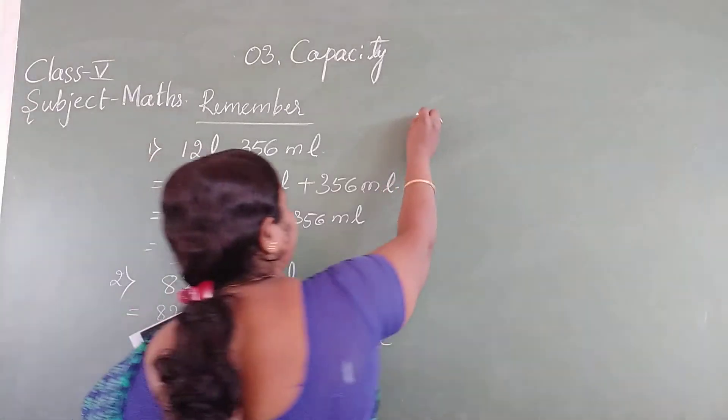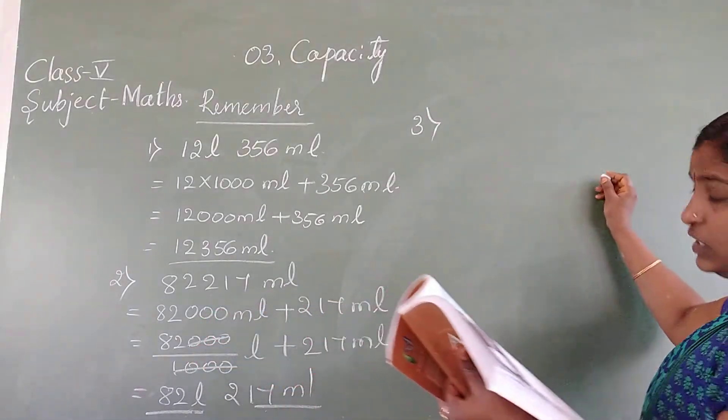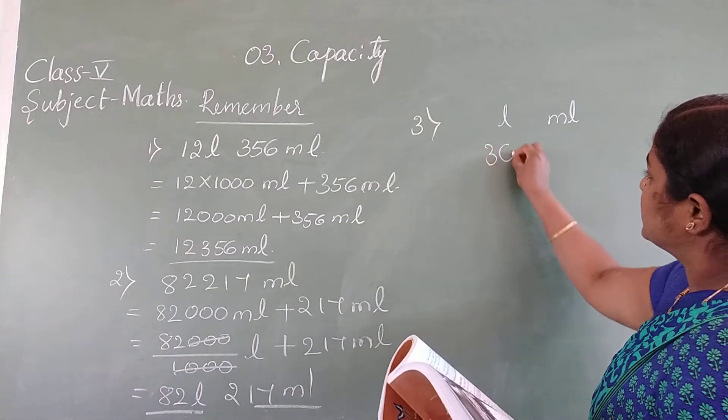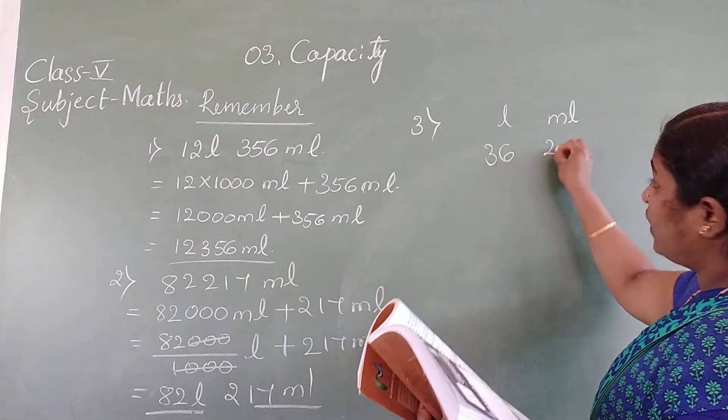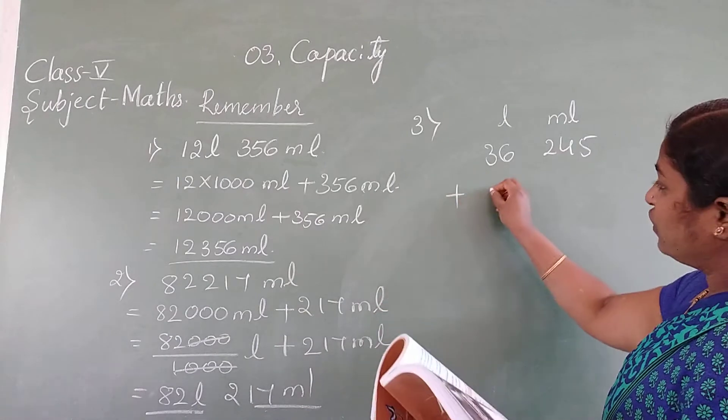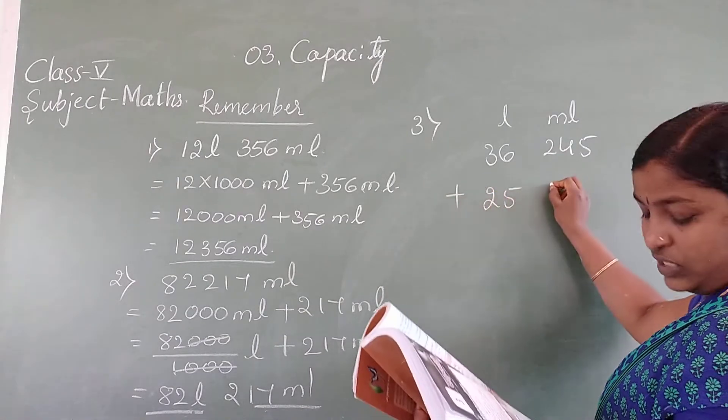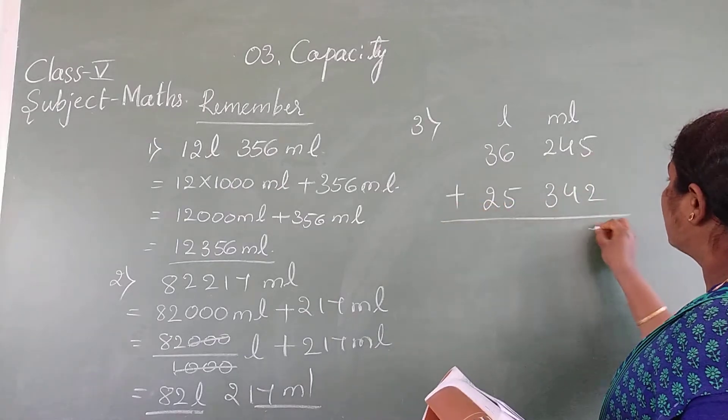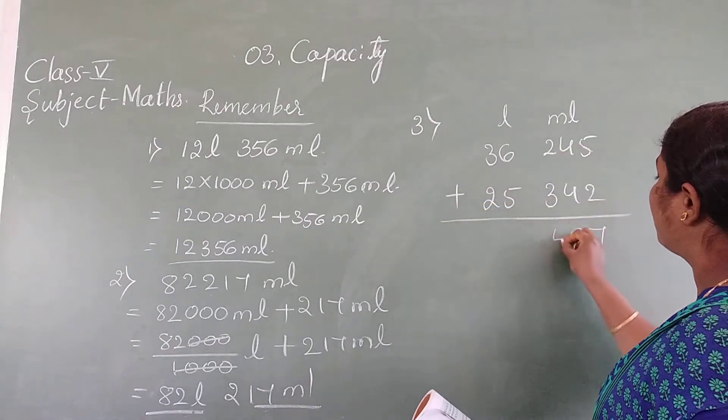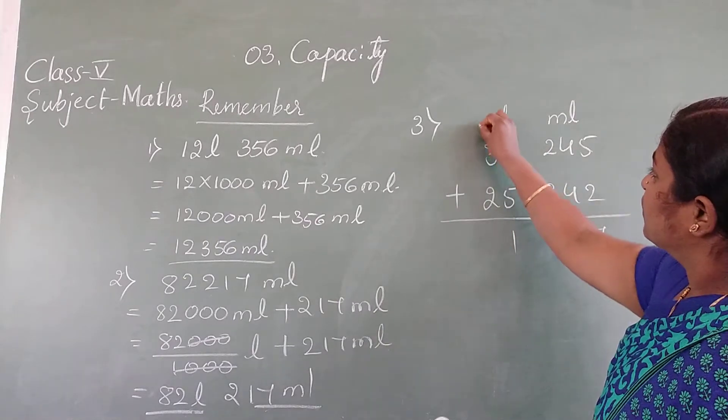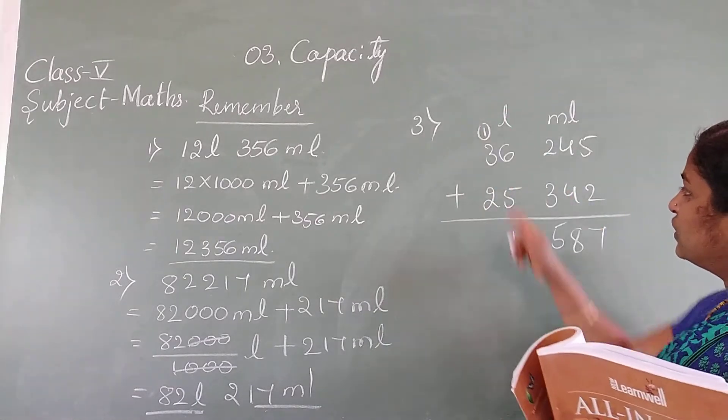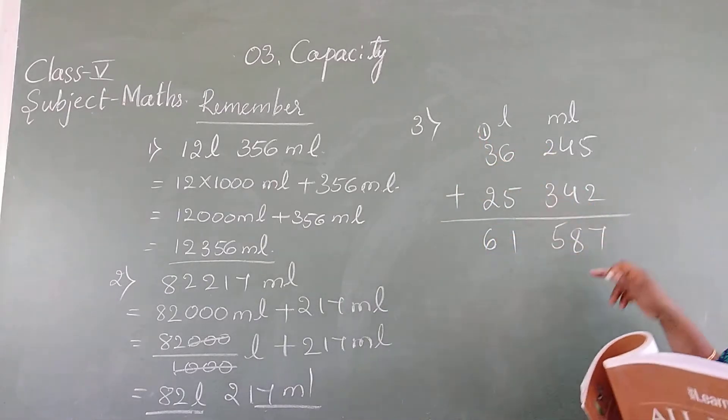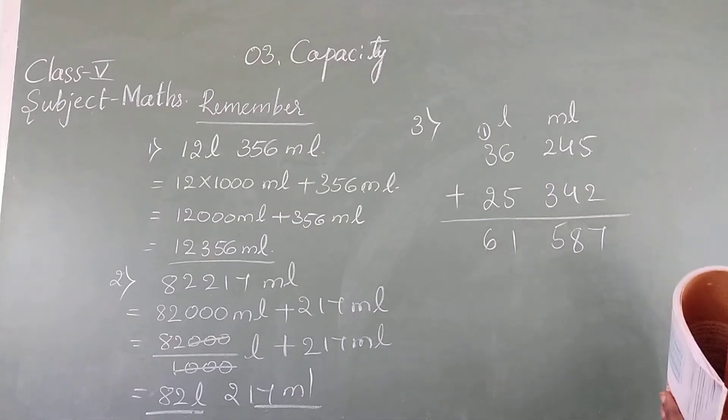Third question: 36 litre 245 ml add with 25 litre 342 millilitre. 5 plus 2 is 7, 4 plus 4 is 8, 3 plus 2 is 5, 6 plus 5 is 11, carry 1. The answer is 61 litre 587 millilitre.